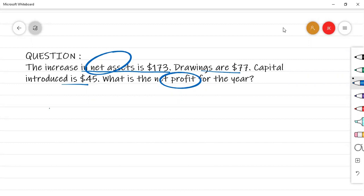And business equation is something that closing net assets is equal to what? Opening net assets plus additional investment plus net profit and minus drawings.